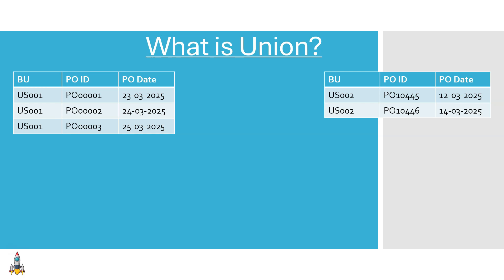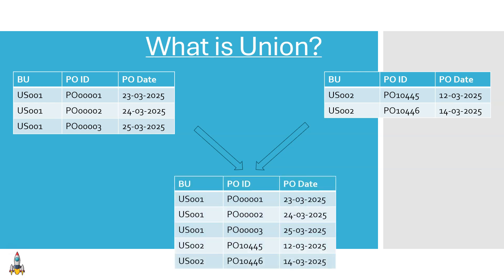You can think of this as two different sources of data for purchase order transactions. Now, if we have a requirement to create a single report combining both of these transaction datasets together, we can use unions. Union is a SQL technique which allows us to combine unrelated data coming from two different sources into one single report.